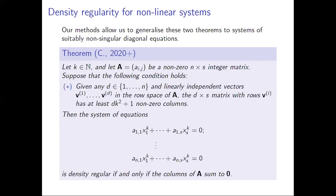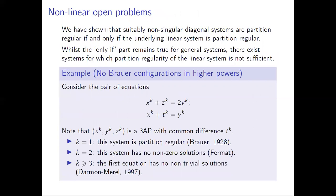Once again we can use the same framework with Rado's criterion to extend this to systems of equations. We have the same non-singularity condition (star) on the matrix A, and we conclude that provided this condition is met, the system of equations in kth powers is density regular if and only if the columns of the matrix sum to zero. The proof is very similar to Chow-Lindqvist-Prendiville's work, but we require some extra results to handle the non-singularity conditions on A and put everything together.